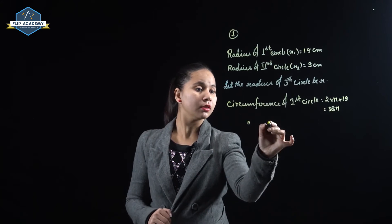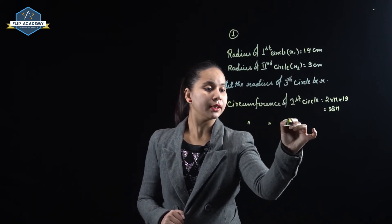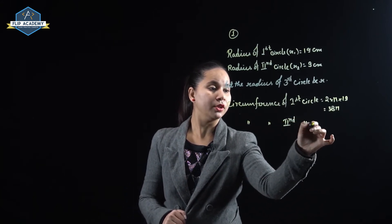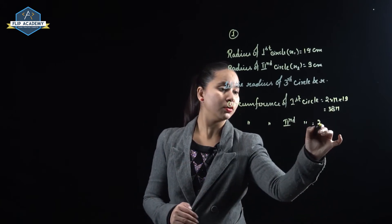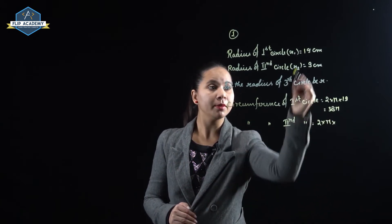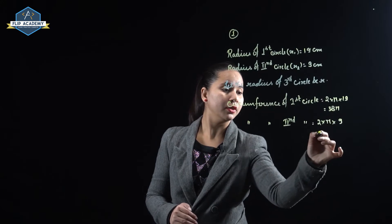Similarly, circumference of second circle is equal to 2 pi r, 2 into pi and here r is 9. So it is equal to 18 pi.